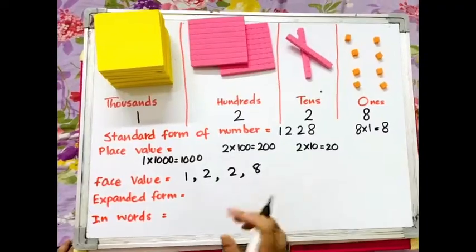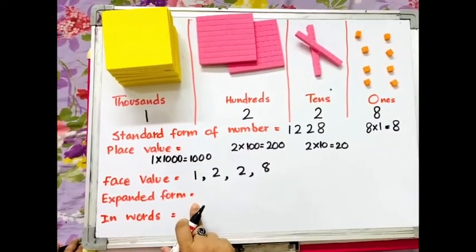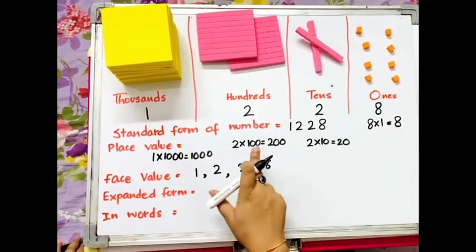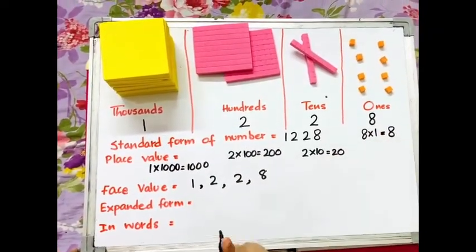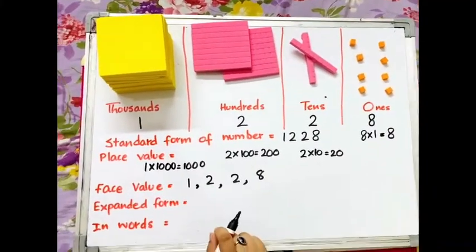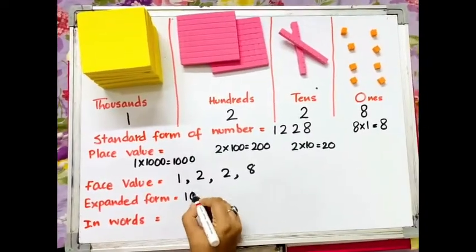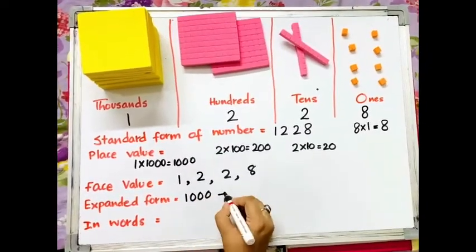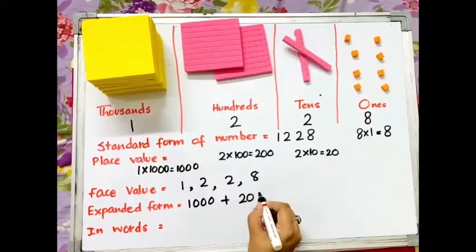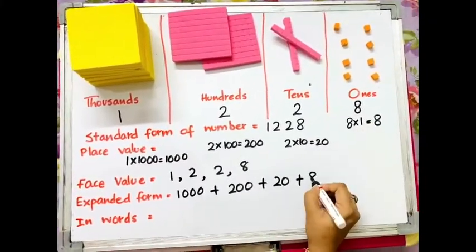We can also find the expanded form of this number, which is actually the sum of all the place values. Again, expanded form is the sum of all the place values. In this case, it will be 1000 plus 200 plus 20 plus 8.